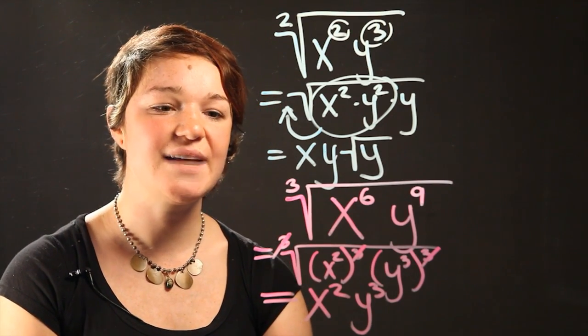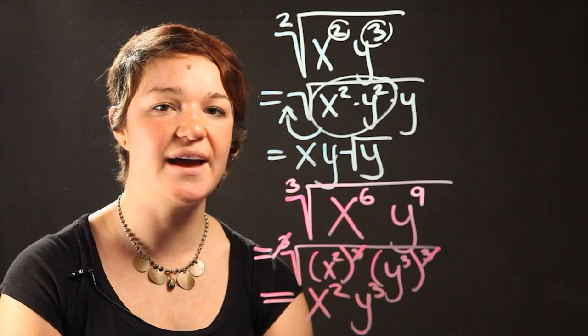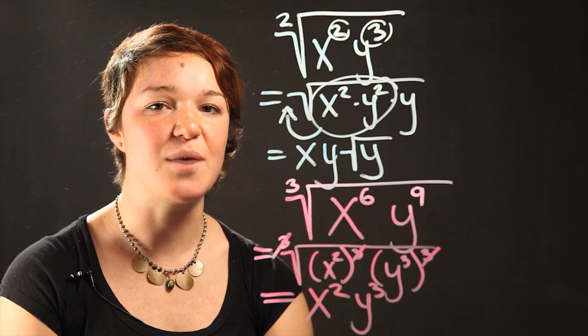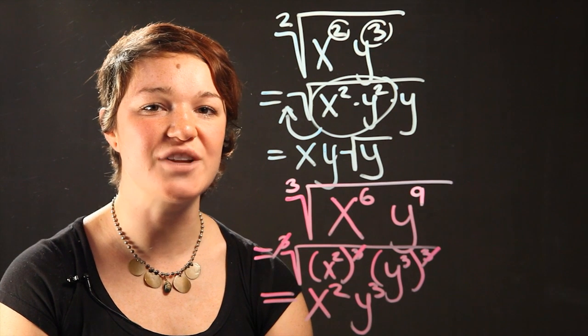So that's how you do it. That's how you simplify a radical knowing that all variables are represented by positive numbers. Thanks for watching. I'm Dr. K.